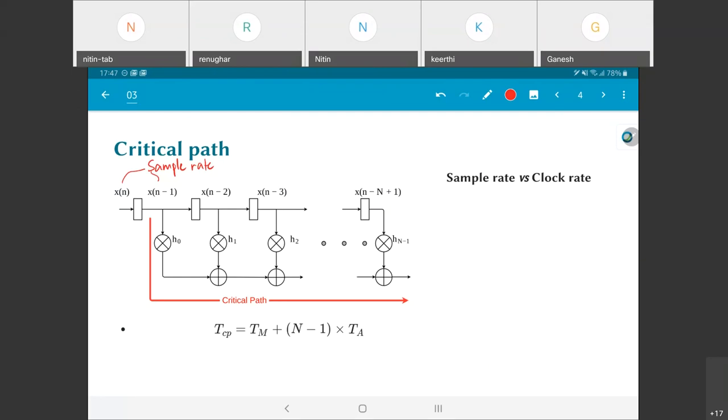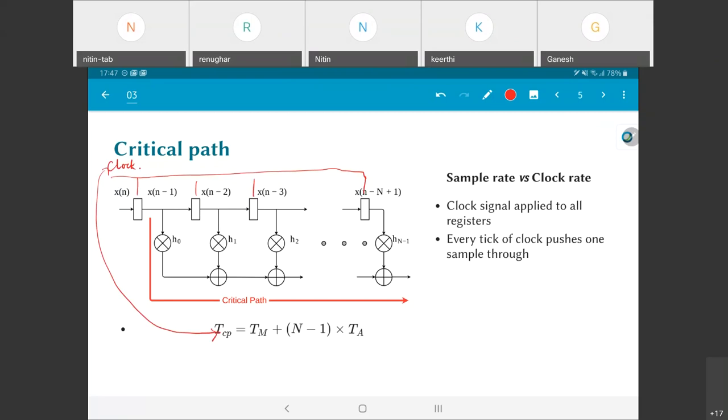In this case, what can I say about the sample rate and the clock rate? Effectively, what I'm going to assume is that this clock signal is going to be applied to all the registers. All of these things have some kind of a clock applied to them, and the analysis that I've done, T_cp equal to T_m plus N minus 1 into T_a, essentially relates to this clock period. What I have is that the T_cp equal to T_m plus N minus 1 times T_a is such that this clock which I'm applying to the registers must have a period greater than that. Every tick of this clock, in the structure that I have shown, essentially pushes one sample through. Because every time that the clock ticks, there will be a transfer of data across the registers from input to output of the registers. This means that the values that are going into the multiplier shifts by 1.